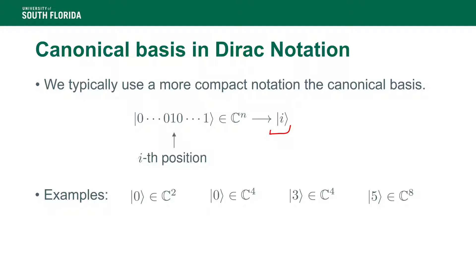Counter-intuitively, |0⟩ is not the zero vector — because the index runs from zero to n minus one, |0⟩ in C² is the first vector of the canonical basis. There's a little ambiguity here: |0⟩ denotes the first vector of the canonical basis, but does not specify which vector space we're working in. I'll try to specify the ambient vector space whenever there's potential for ambiguity.